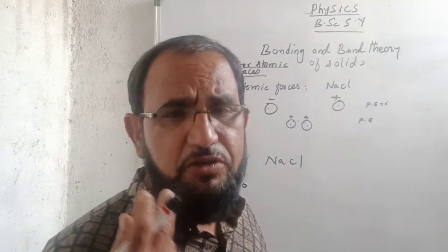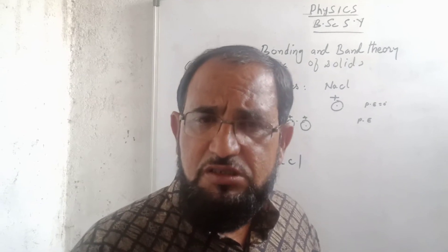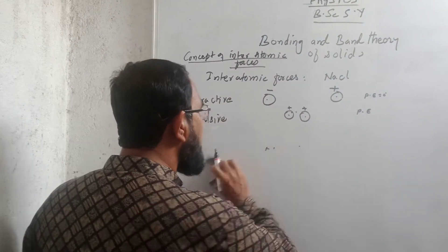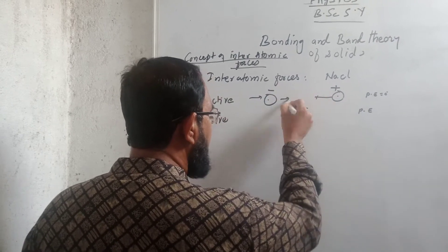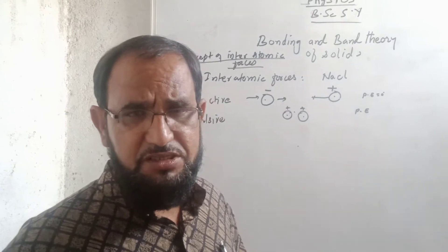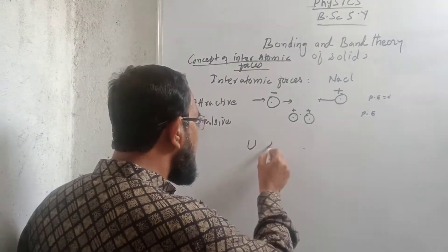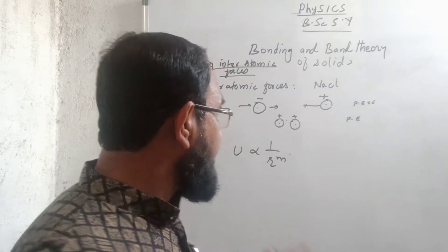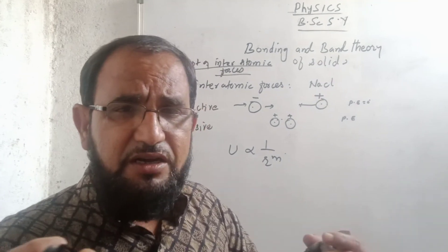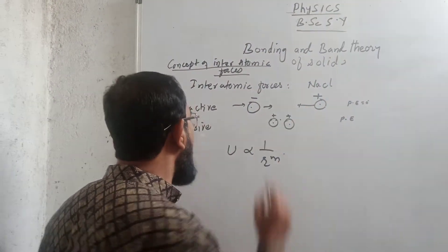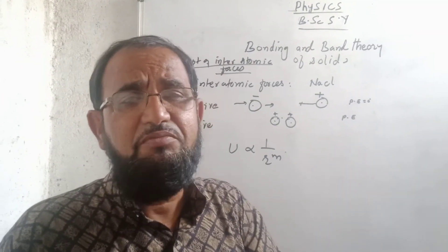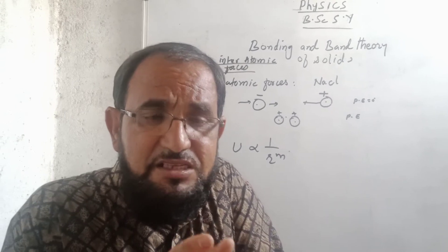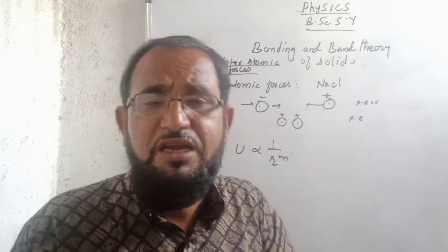We have to understand the two types of forces acting on the molecules: attractive forces and repulsive forces. Suppose two atoms or molecules are moving towards each other because of the attractive forces, and the potential energy will be inversely proportional to the interatomic distance R raised to M. Because of the attractive forces, the two atoms come close to each other. But when they are very close to each other, repulsive forces develop and these repulsive forces slightly repel the atoms, and equilibrium is obtained.